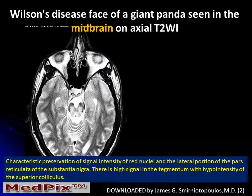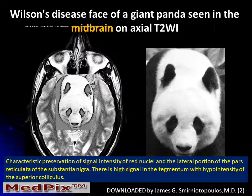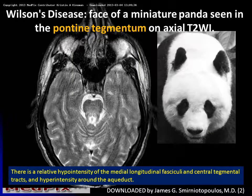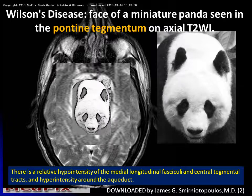Wilson's disease is also known for having what is called the giant panda sign seen in the midbrain on axial T2-weighted images. This is formed by the normal low signal intensity of the white matter of the cerebral peduncles, the normal low signal intensity of the red nucleus, and abnormal hyperintensity involving the remainder of the brain stem. We sometimes talk about the small panda sign involving the pontine tegmentum, with a pattern of abnormal hyperintensity involving the brain stem in the region around the cerebral aqueduct.